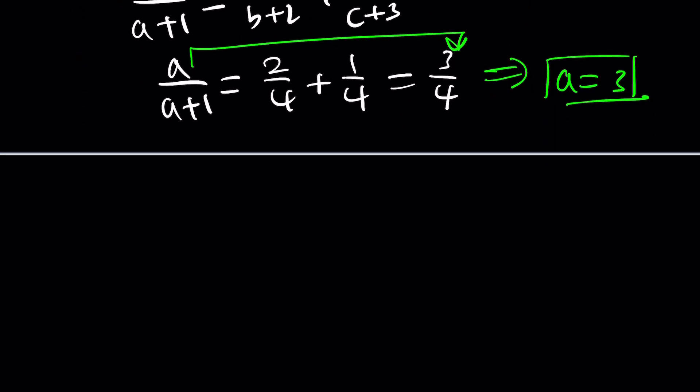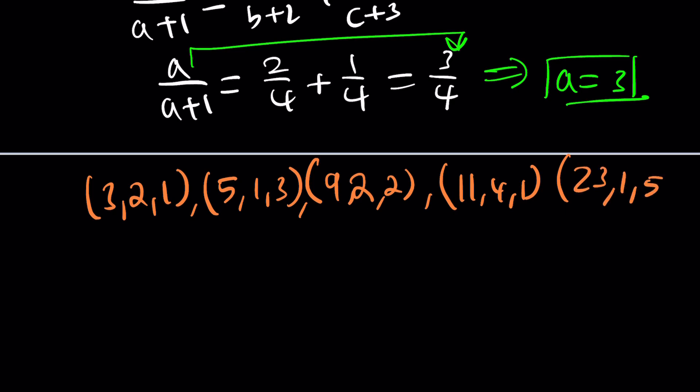So here's all the solutions. You want me to write them down? Three, two, one is one of them. Five, one, three is another one. And then we get nine, two, two. And you can verify these. Eleven, four, one. And finally, twenty-three, one, five. And finally, twenty-seven, five and one. So those are the only solutions.